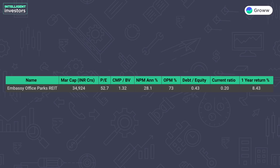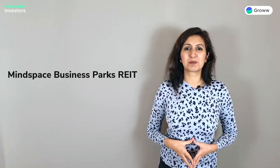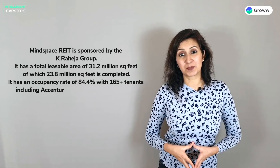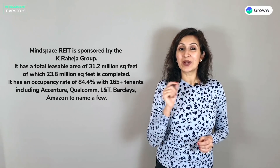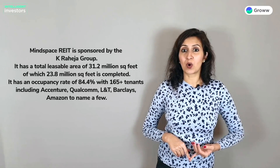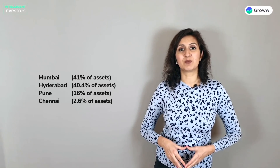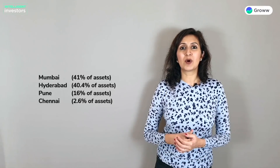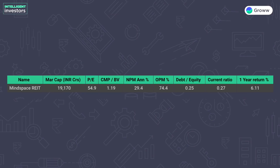Next, let's talk about Mindspace Business Park REIT, sponsored by K Raheja Group. It has a total leasable area of 31.2 million square feet, of which 23.8 million square feet has been completed. Its occupancy rate is 84.4% with 165-plus tenants, including Accenture, Qualcomm, L&T, Barclays, and Amazon. The weighted average lease expiry is 6.6 years, and it mostly owns office spaces. Properties are located in Mumbai (41%), Hyderabad (40.4%), Pune (16%), and Chennai (2.6%). Financially, it generated a 6.11% return last year, with a debt-to-equity ratio of 0.25x, current ratio of 0.27x, PE of 54.9x, price-to-book of 1.19x, net profit margins of 29.4%, and operating margins of 74.4%.